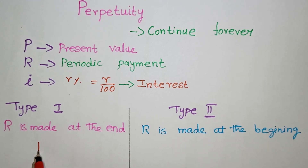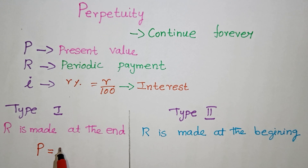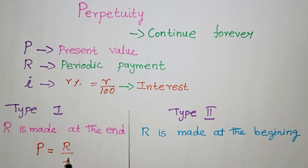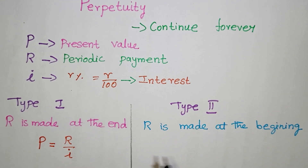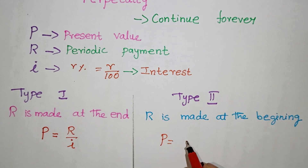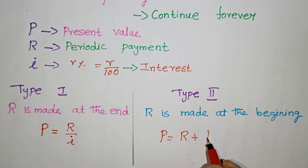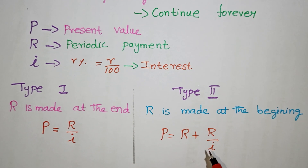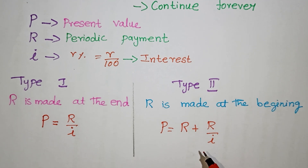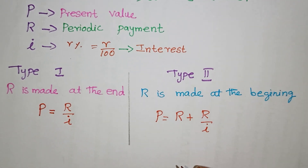For present value: the formula for Type 1 (payment at end) is P equals R divided by i. For Type 2 (payment at beginning), P equals R plus R divided by i. We add one extra R to the formula.